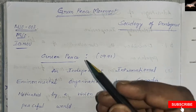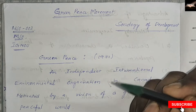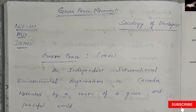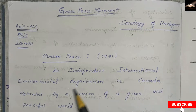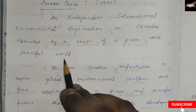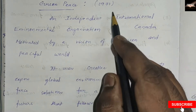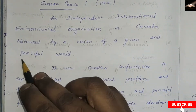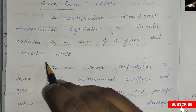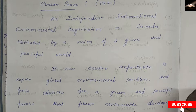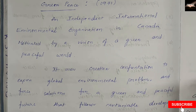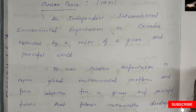You may have a question on the Green Peace Movement. It is actually a general topic. Greenpeace is an independent international environmental organization in Canada, motivated by a vision of a green and peaceful world. It was established in 1971. They act against environmental problems and against industrial policies and government steps which degrade the environment.